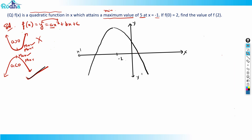Here is the line of symmetry at x equal to minus 1. That basically means that whatever things happen will happen at equal distances. For example, the graph goes down on both sides. Whatever value I get at x equal to minus 2 — that's 1 unit to the left — I should get the same value at 1 unit to the right, which is x equal to 0. So these two values should be the same. That's the line of symmetry — at 1 unit left and 1 unit right you get the same value.